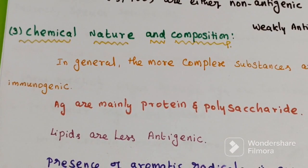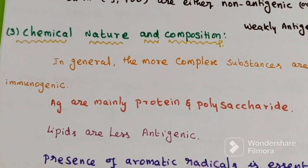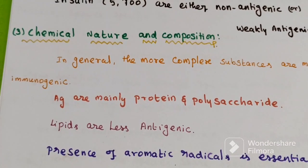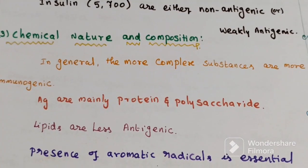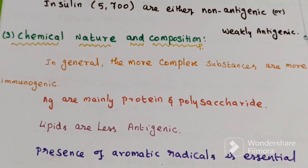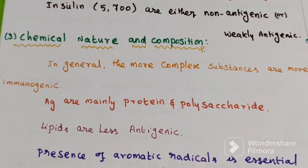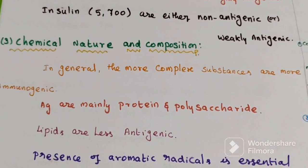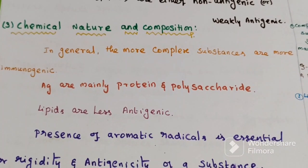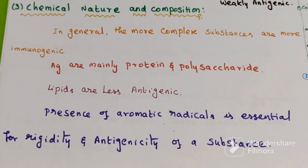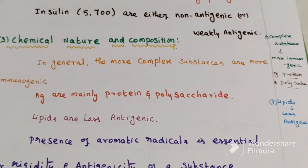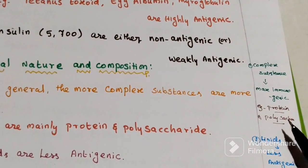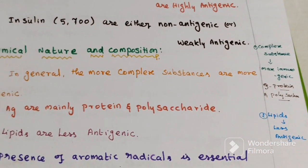The third factor is chemical nature and composition of antigen. In general, more complex substances are more immunogenic. Antigens are mainly proteins, and some are polysaccharides. Proteins and polysaccharides are more antigenic. Lipids are less antigenic. It is presumed that the presence of aromatic radicals is essential for rigidity and antigenicity of a substance. Complex substances such as proteins and polysaccharides are considered maximally immunogenic, while lipids are considered less immunogenic.